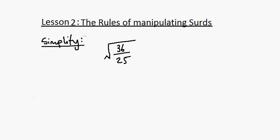Let's look at another example. We are asked to simplify the square root of 36 over 25. Let's use the second rule, so we write this as square root of 36 over the square root of 25. Simple math: 6 over 5.